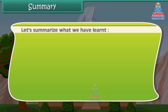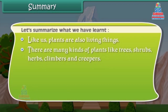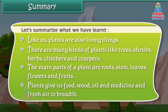Now friends, let us summarize what we have learned so far. Like us, plants are also living things. There are many kinds of plants like trees, shrubs, herbs, climbers, and creepers. The main parts of a plant are roots, stem, leaves, flowers, and fruits. Plants give us food, wood, oil, medicine, and fresh air to breathe.